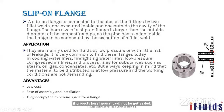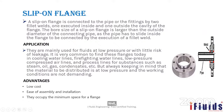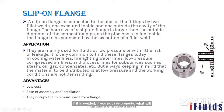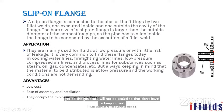In slip-on flanges, you must ensure during fabrication that the pipe end is inside the flange face — not projecting beyond it. If the pipe projects past the flange face, the gasket will not seal properly when connected to the mating flange. This is an important detail to check during fabrication.